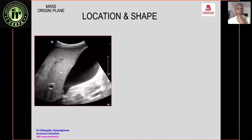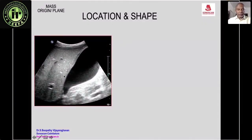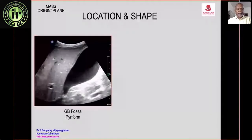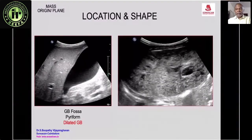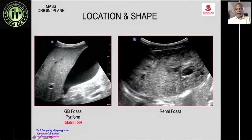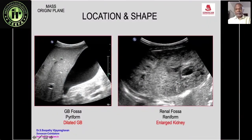A mass can also be diagnosed based on its location and shape. A cystic mass in the gallbladder fossa that is piriform — taking the shape of the gallbladder — with no separate gallbladder visible is a dilated gallbladder. A mass in the renal fossa with the shape of the kidney is an enlarged kidney.